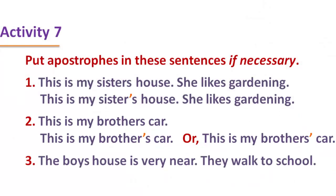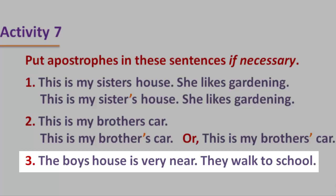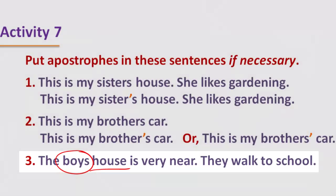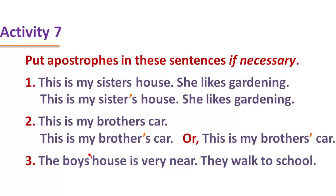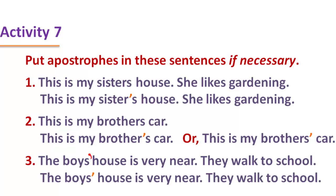Sentence 3: 'The boys' house is very near. They walk to school.' There is a single house, but the noun 'boys' is plural, confirmed by the pronoun 'they' in the second sentence. So we put the apostrophe after the 's': 'boys'' — the house belongs to the boys. The answer is 'The boys' house is very near,' with the apostrophe placed immediately after the 's.'